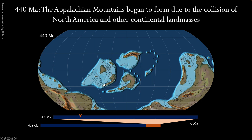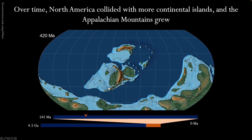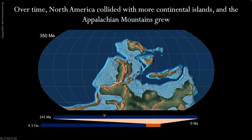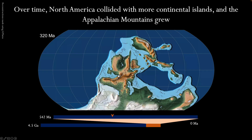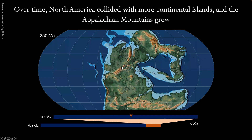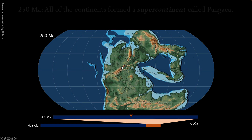440 million years ago, the Appalachian Mountains began to form due to the collision of North America and other smaller continental land masses. Over time, North America collided with more and more continental land masses, and the Appalachian Mountains grew in height.